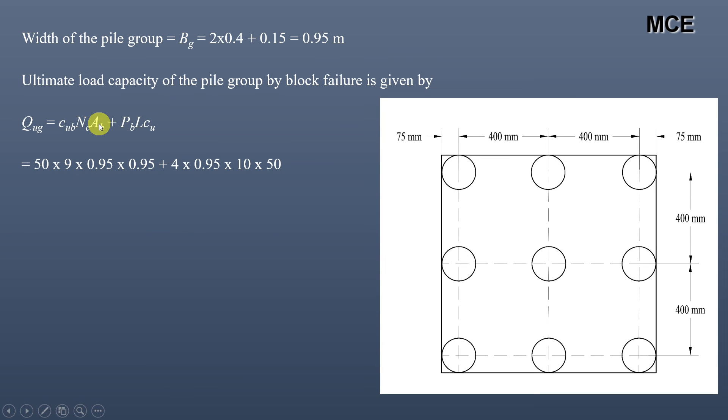Ab is the cross-sectional area of the pile group, so it will be 0.95 × 0.95. Pb is the perimeter of the pile group, so it will be 4 × 0.95. Length of pile is 10 into Cu which is 50. This gives me the ultimate load capacity of this pile group on the basis of block failure as 2306.13 kN.